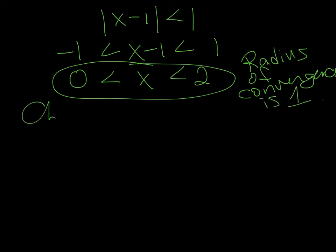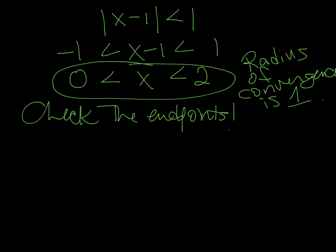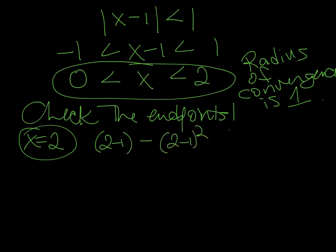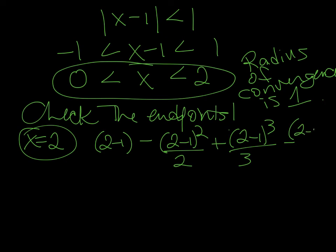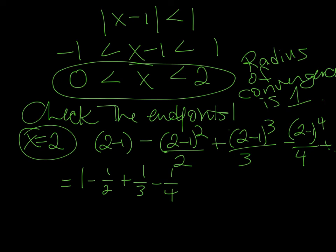Let's check x equals 2 first. When x is equal to 2, the series becomes: 2 minus 1, minus 2 minus 1 squared over 2, plus 2 minus 1 cubed over 3, minus 2 minus 1 to the 4th over 4, and so on. Since 2 minus 1 is just 1, this is 1 minus 1 half plus 1 third minus 1 fourth plus and so on. This is the alternating harmonic series, which we know converges.